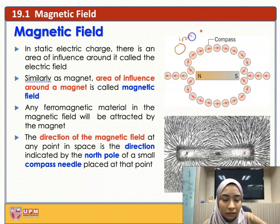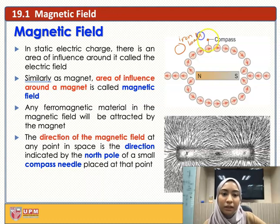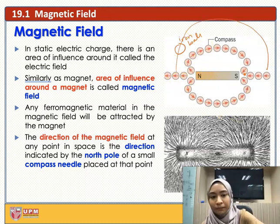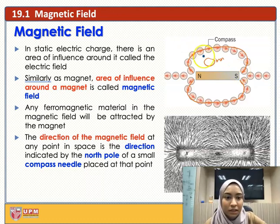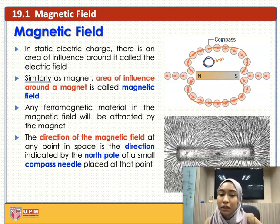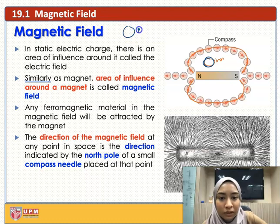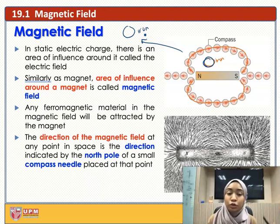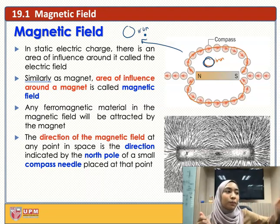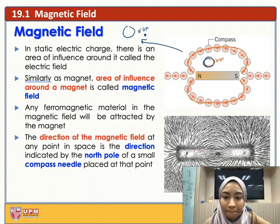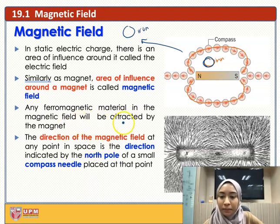If I put an iron ball inside the region where the magnetic field exists, it will be attracted. However, if I place my iron ball far away — where I assume the magnetic field does not reach — the iron will not be attracted. You know this already: if you have a magnet and an iron object placed too far away, it won't be attracted. So any ferromagnetic material in the magnetic field will be attracted; it needs to be within the magnetic field.